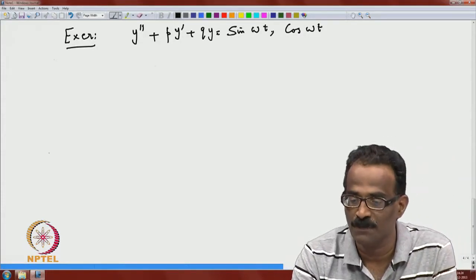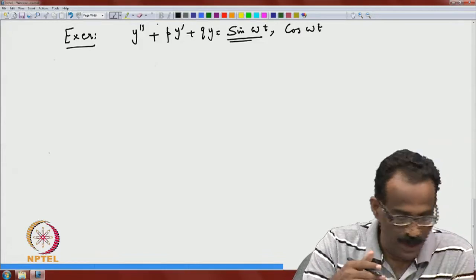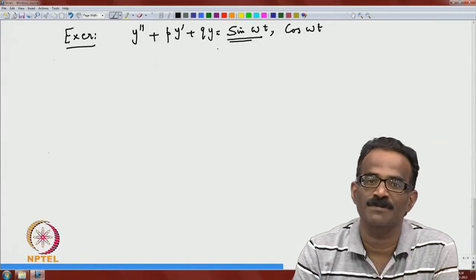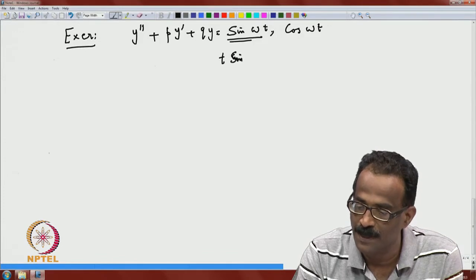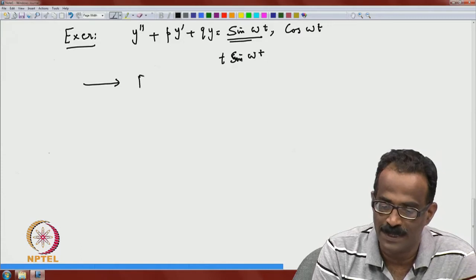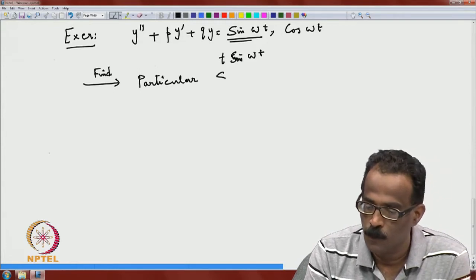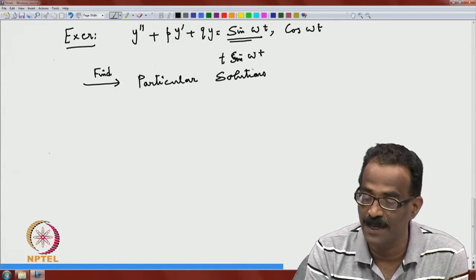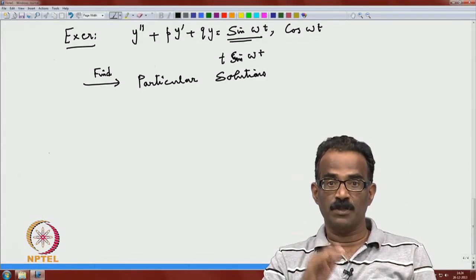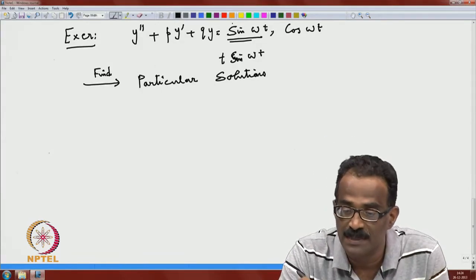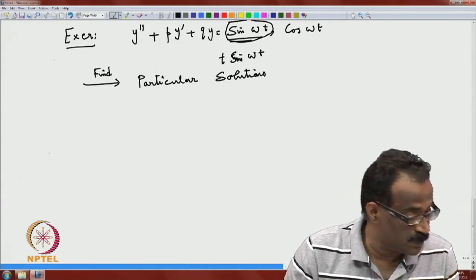For cos(ωt) or sin(ωt) forcing, look for a solution of that form. If ω is not a root of the homogeneous system, proceed with the same form. If that is not a solution, try ω·sin(ωt). This completely analyzes the second-order equation with constant coefficients with various forcing signals on the right-hand side.